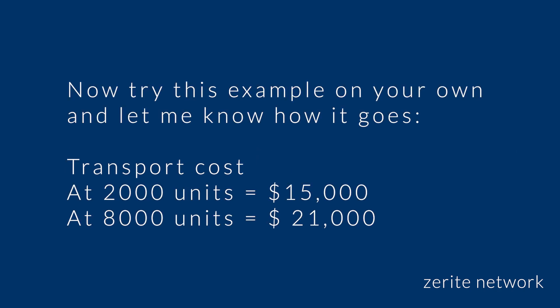Try this example on your own and let me know how it goes. You have transport cost: at 2,000 units it's $15,000, and at 8,000 units it's $21,000. Find the variable cost and the fixed cost elements. You should get the variable cost per unit to be $1 and the fixed cost to be $13,000. See you in the next video.